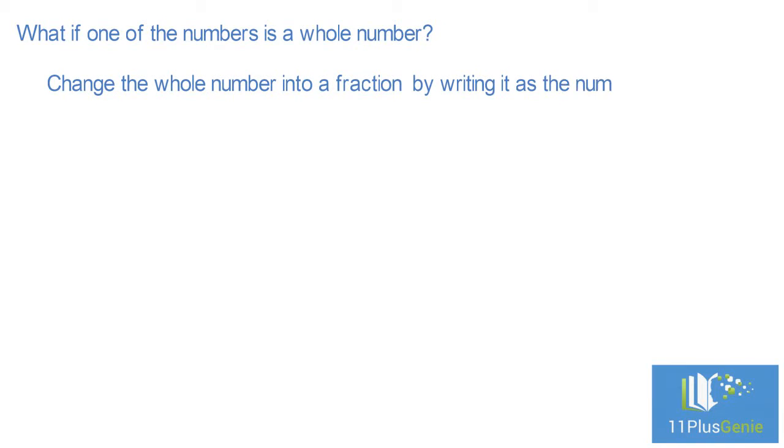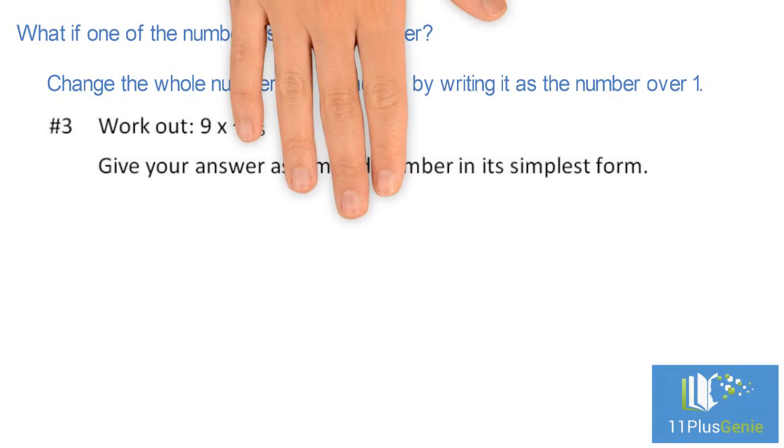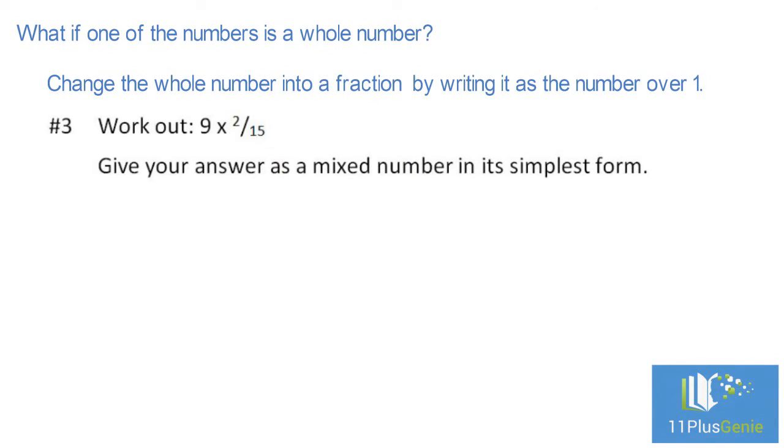What if one of the numbers is a whole number? Change the whole number into a fraction by writing it as the number over one. Number three: work out nine times two fifteenths. Give your answer as a mixed number in its simplest form. We have nine over one times two over fifteen. Top times top gives us nine times two, which equals eighteen.